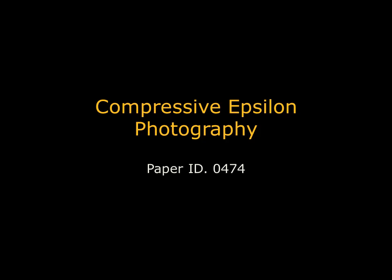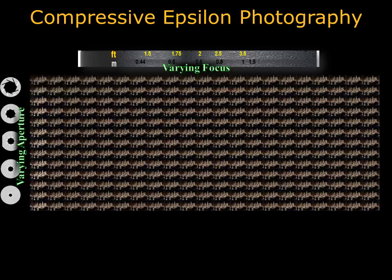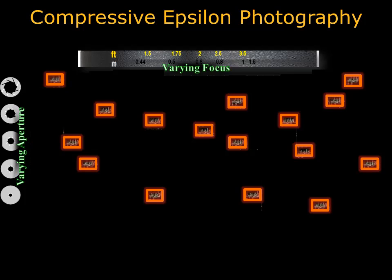Compressive Epsilon Photography is a framework which enables post-capture control of a camera's aperture and focus settings. The Epsilon Photography stack is the space of images formed by taking pictures of a scene with all possible camera parameter combinations. Exhaustively sampling this space is impractical given that a camera can have well over 1,000 parameter combinations. Instead, we show that the images in this space can be reconstructed from just a handful of photographs with carefully selected setting combinations.